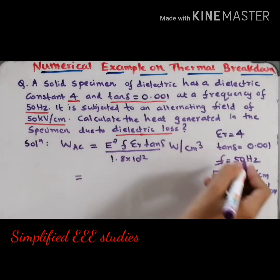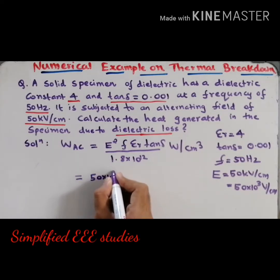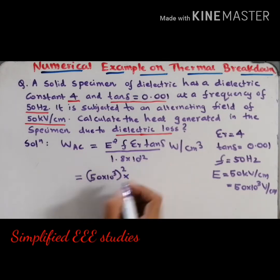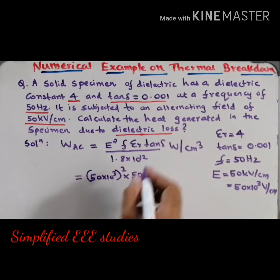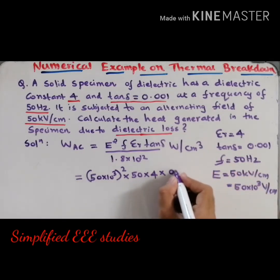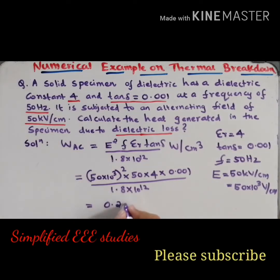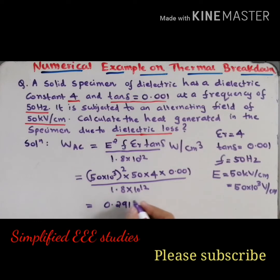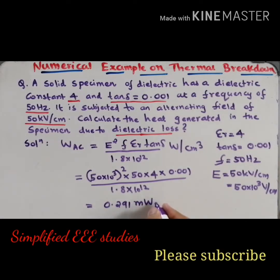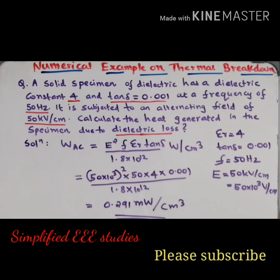Directly substitute into the equation. E is (50 × 10³)², supply frequency is 50, εr is 4, tan delta is 0.001, all divided by 1.8 × 10¹². Please use a calculator to find the numerical value. The final result is 0.291.